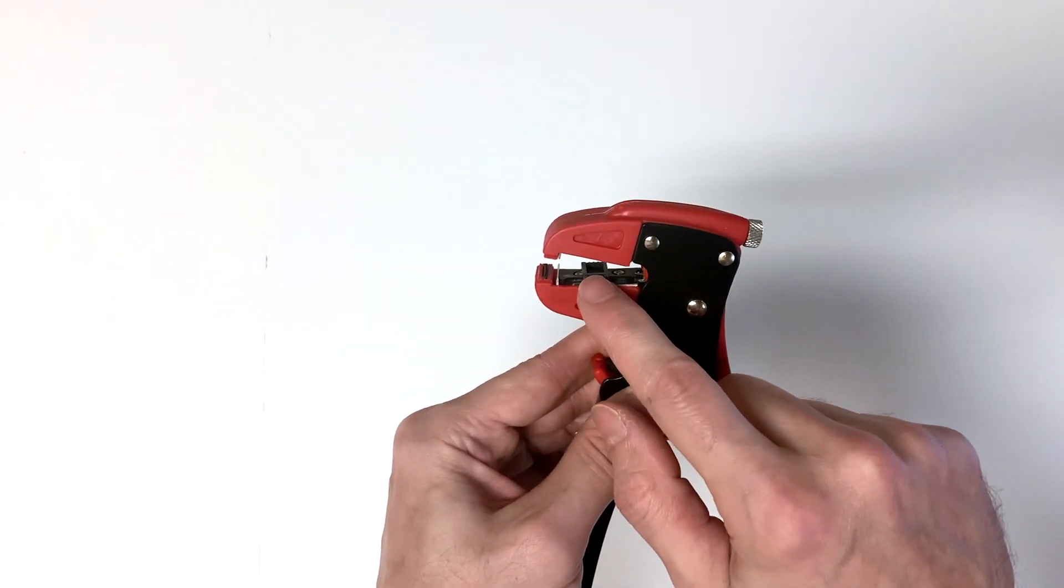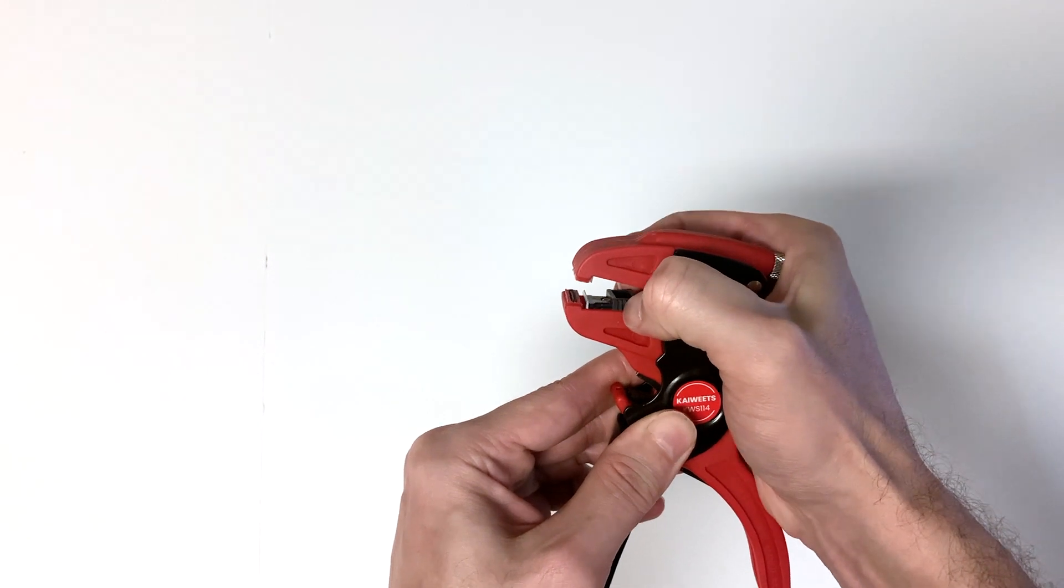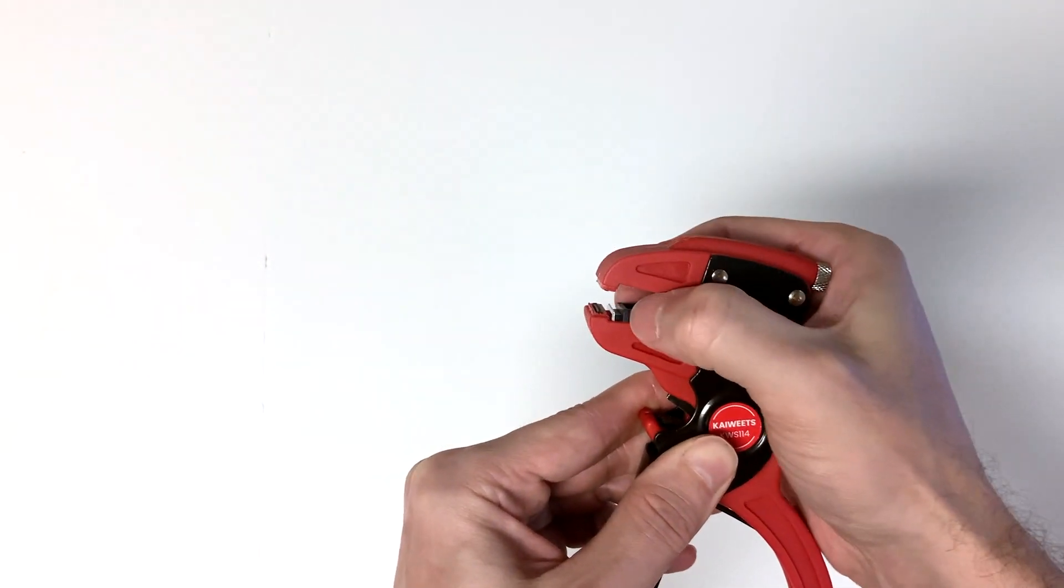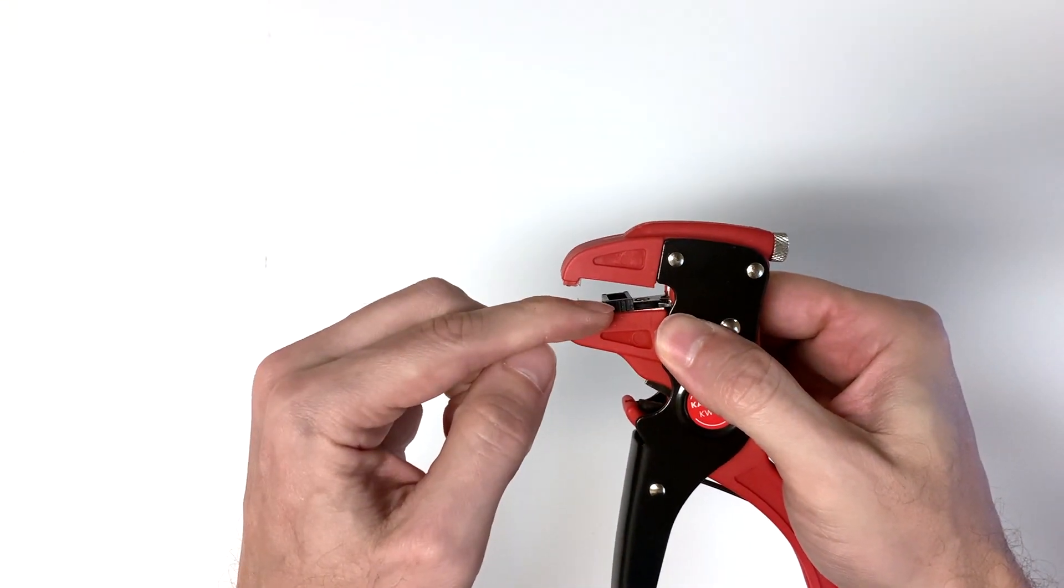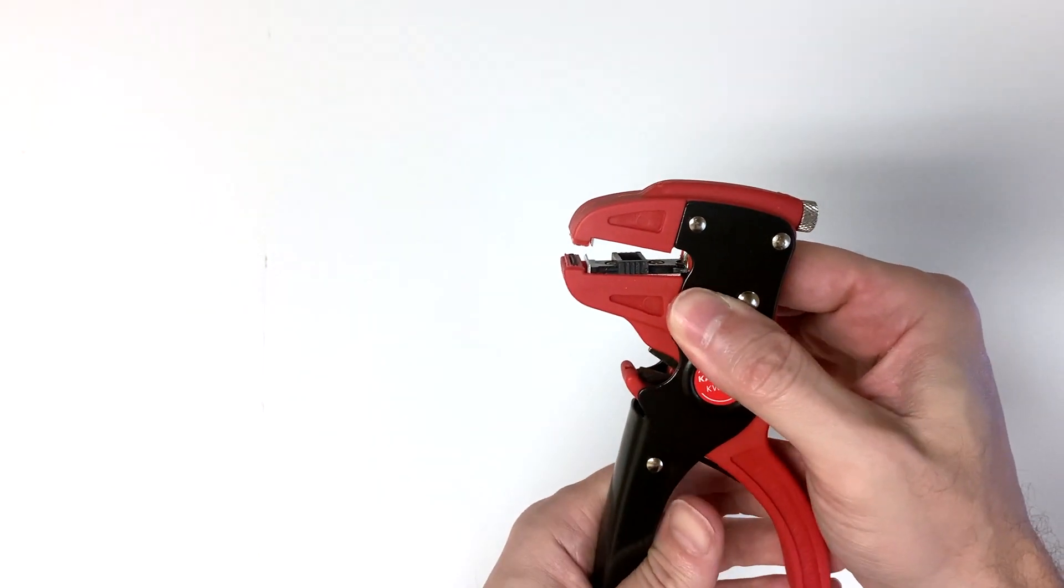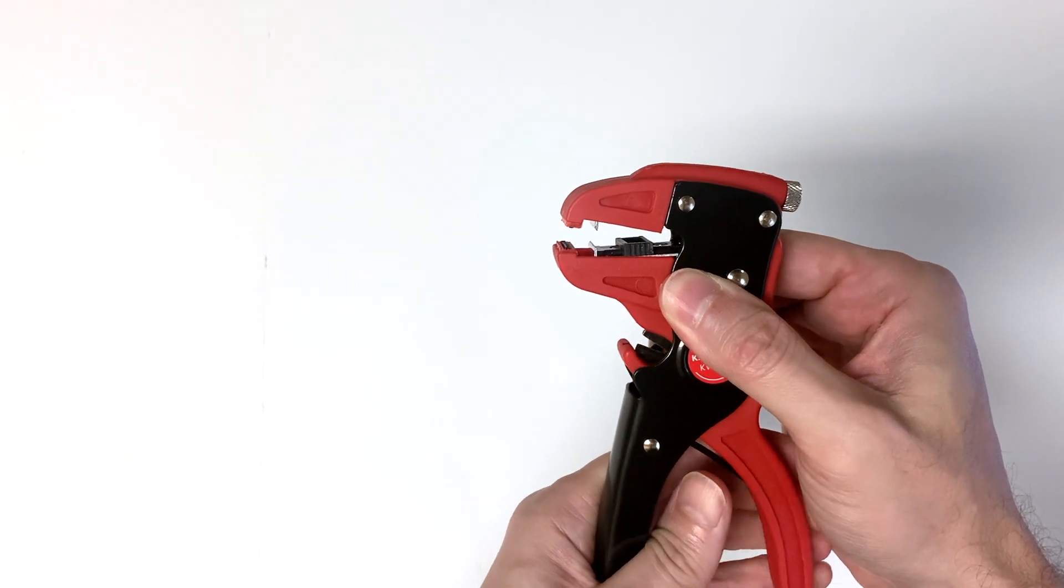Then inside here you see this block that can be moved back and forth and what that does is it helps you every time you insert a wire, you can insert a wire until it stops at that block and that will give you a consistent amount of sheathing taken off of each wire.